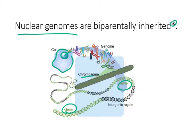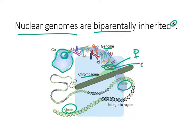So normally we think of nuclear genomes when we think of DNA. And except for a few exceptions we'll come back to later, your nuclear genome — that DNA in your nucleus — is biparentally inherited. That means your DNA came from both of your parents. If we focus on this set of chromosomes, one chromosome is from the mom and one is from the dad.